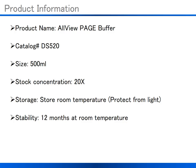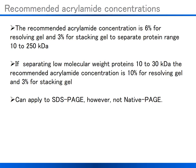Here's the product information for AllView Page Buffer. The catalog number is DSS-520. It comes in a 500 ml volume size with a stock concentration of 20x, which should be diluted down to 1x. You may store this at room temperature for 12 months. The recommended acrylamide concentration is 6% for resolving gel and 3% for stacking gel to separate a protein range of 10 to 250 kilodaltons. If separating low molecular weight proteins of 10 to 30 kilodaltons, the recommended acrylamide concentration is 10% for resolving gel and 3% for stacking gel.